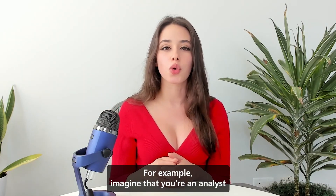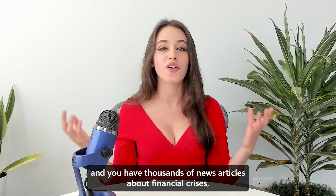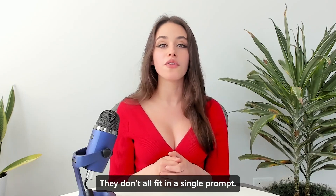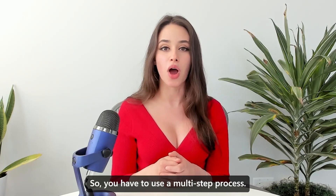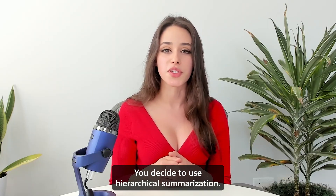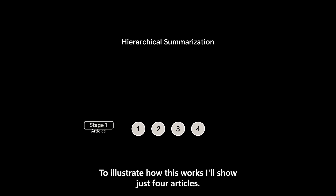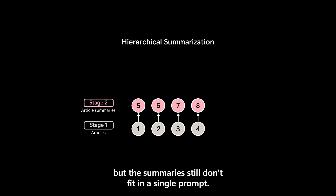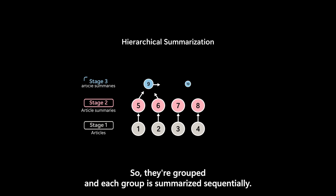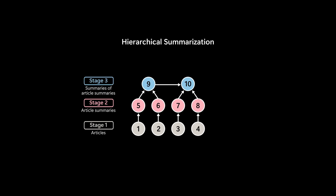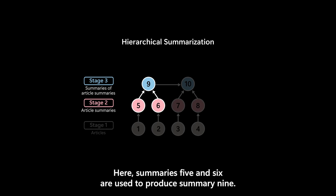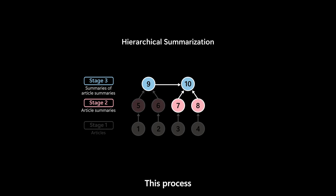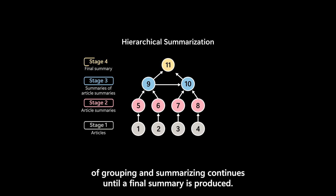For example, imagine that you're an analyst and you have thousands of news articles about financial crises, but they're a little bit dense, so you want to summarize them. They don't all fit in a single prompt, so you have to use a multi-step process — hierarchical summarization. To illustrate, consider just four articles. The process starts with the language model generating a summary for each article. But the summaries still don't fit in a single prompt, so they're grouped and each group is summarized sequentially. Summaries 5 and 6 are used to produce summary 9; summaries 7, 8, and 9 are used to produce summary 10. This process of grouping and summarizing continues until a final summary is produced.